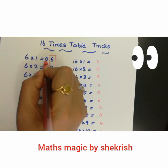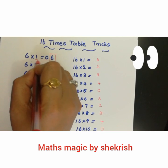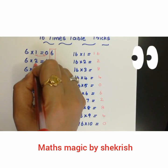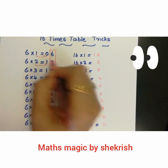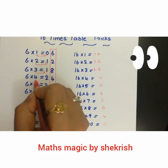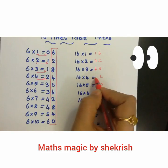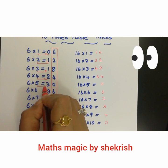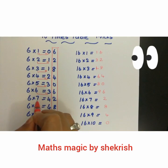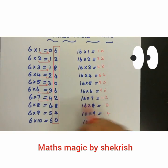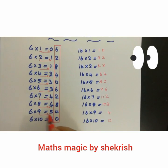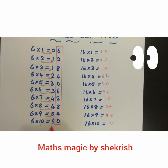Now we add the tens digits. 1 plus 0 is 1, then 2 plus 1 is 3, 3 plus 1 is 4, 4 plus 2 is 6, 5 plus 3 is 8, 6 plus 3 is 9, 7 plus 4 is 11, 8 plus 4 is 12, 9 plus 5 is 14, and 10 plus 6 is 16.